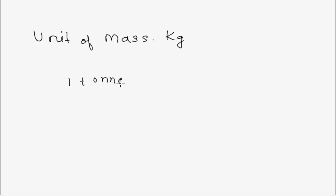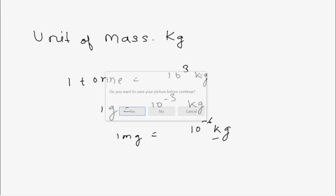The unit of mass is kilogram. Now here, nothing to discuss, just some conversions like one ton equals 10 to the power 3 kg. One gram equals 10 to the power minus 3 kg. One milligram equals 10 to the power minus 6 kg.